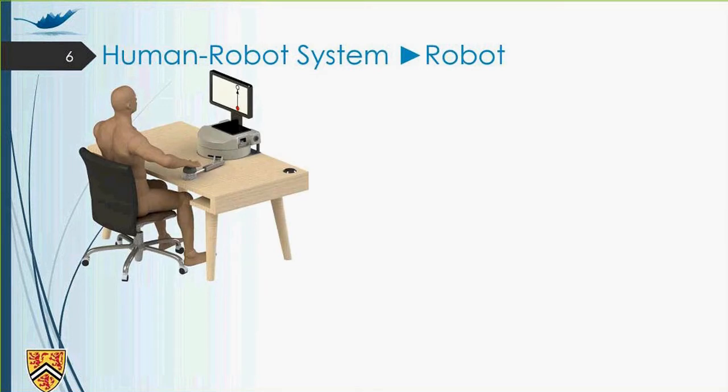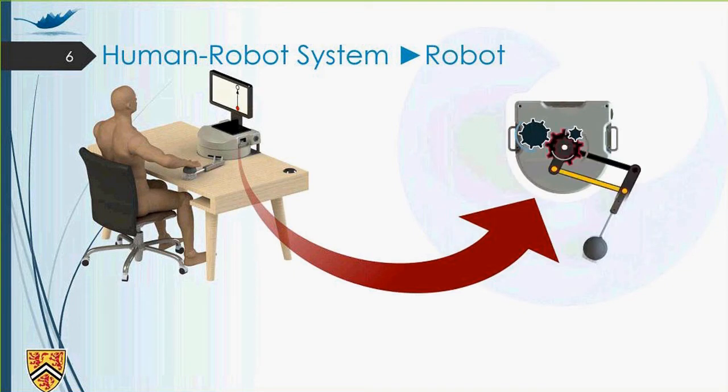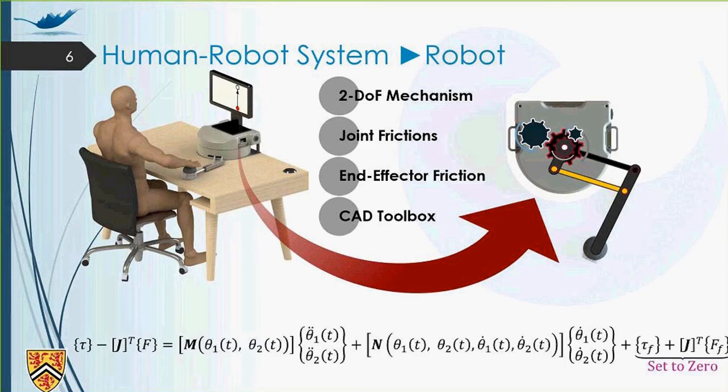Now, regarding our project, as I said, there is a human and robot system. On one side, we have the robot subsystem, which is a two degree of freedom mechanism. It has joint frictions and end-effector friction. For modeling the robot, we will use the CAD toolbox to import it from SOLIDWORKS to the MapleSim software. And finally, we get the dynamic equation of the robot, as you see in the picture over here, based on importing from SOLIDWORKS to MapleSim and exporting the dynamic equations from MapleSim.